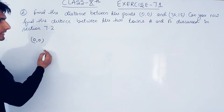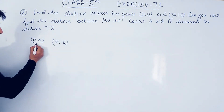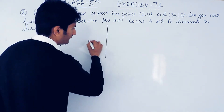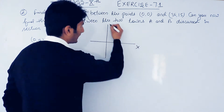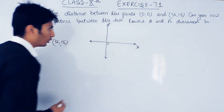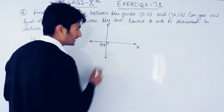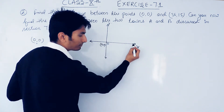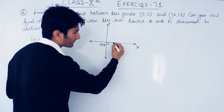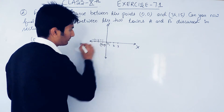In the first part you have to find the distance between this point and this point. I am assuming that you know how to locate points on a Cartesian plane. If you are given that this is the x-axis and this is the y-axis and this is the origin, from the origin, right side are positive numbers: 1, 2, 3, 4, 5. On the left hand side there are negative numbers: -1, -2, -3.